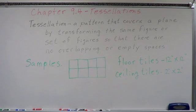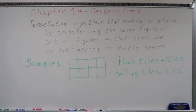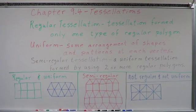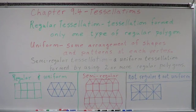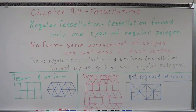Put together a figure and transform it — move it around, rotate it, reflect it — so that we can put it together with no overlapping or empty spaces. Tessellation is a pattern that covers a plane by transforming a figure or a set of figures so that there are no overlapping or empty spaces.